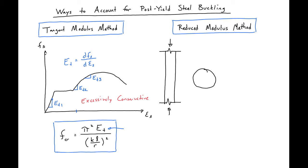This is why the reduced modulus method may be a better method for accounting for our post-yield steel buckling. So what the reduced modulus method takes into account is when we're loading a bar, just a bar in axial compression.